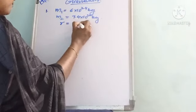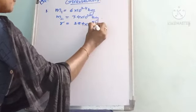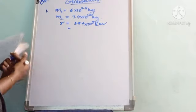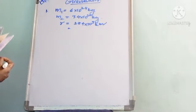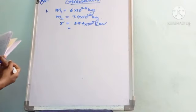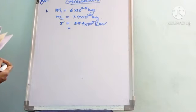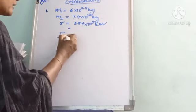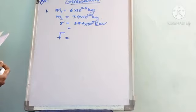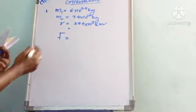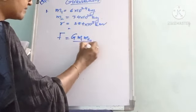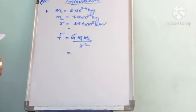Here, mass of Earth is taken as m1 = 6×10²⁴ kg, mass of Moon is m2 = 7.4×10²² kg, and the distance r = 3.84×10⁵ km. We have to find the force between the Earth and the Moon using Newton's universal law of gravitation. The expression is F = G·m1·m2 / r².